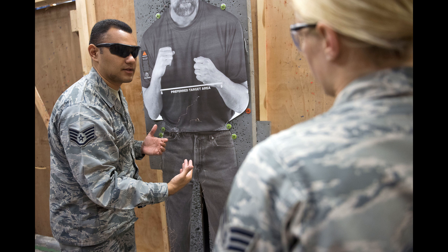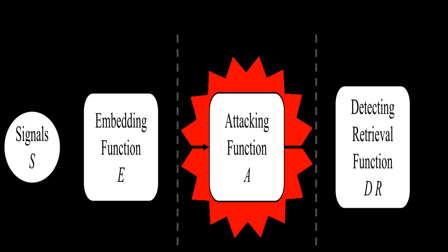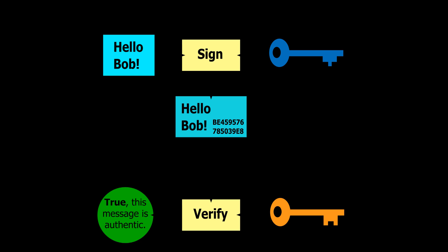In such a system, any person can encrypt a message using the receiver's public key, but that encrypted message can only be decrypted with the receiver's private key. Robust authentication is also possible: a sender can combine a message with a private key to create a short digital signature on the message. Anyone with the sender's corresponding public key can combine the same message and the supposed digital signature to verify whether the signature was valid.